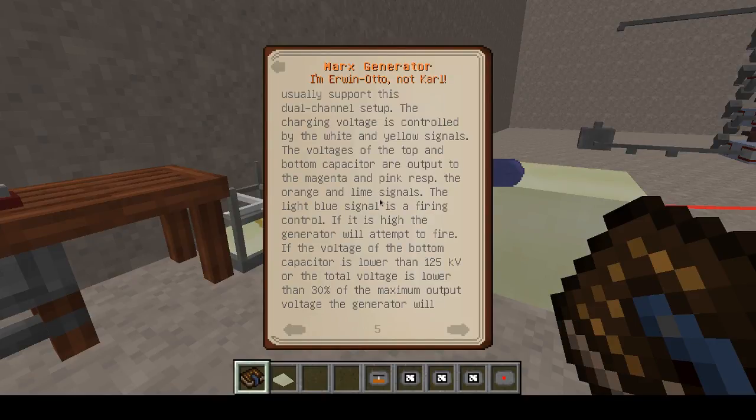The control panel for the Marx generator is going to have five components: a variac to set the charging voltage, a panel meter to monitor the charging voltage, panel meters for the bottom and top capacitor voltage, and a button to fire the generator.